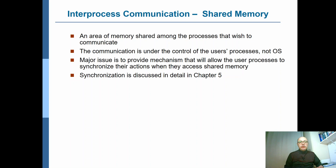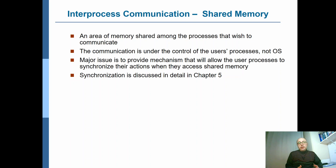One of the models for interprocess communication is shared memory. As the name implies, it's a part of memory shared between two or more processes, so that part of memory appears in the address space of all those processes sharing it. One nice thing about shared memory is that when you try to access the memory, you don't need to go through the operating system — unlike messaging systems — because it is already in the address space of that process, so it can directly access it. This makes shared memory a very fast mechanism for interprocess communication.